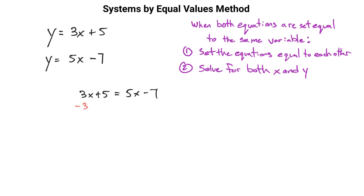From here, it's a matter of solving for x. We subtract 3x from both sides, which gives us 5 equals 2x minus 7. Then we add 7 to both sides, which gives us 12 equals 2x.